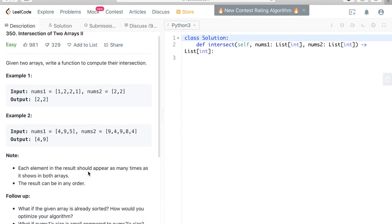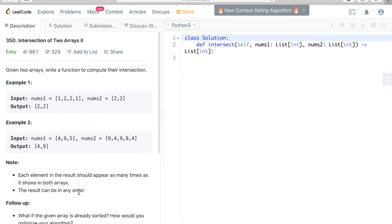Each element in the result should appear as many times as it shows in both arrays. The result can be in any order. Okay, so how do we do this?